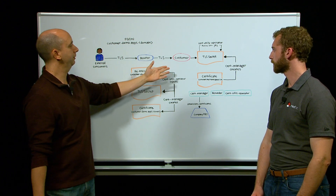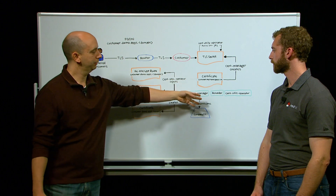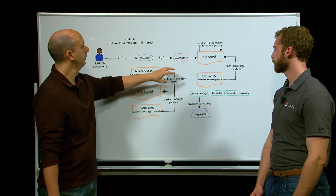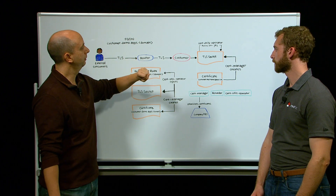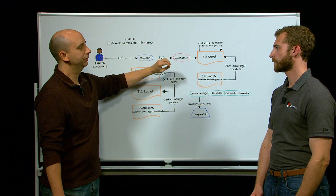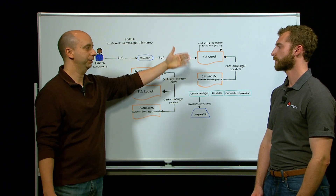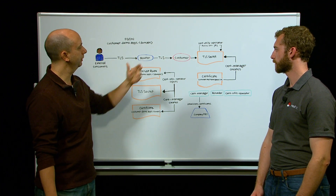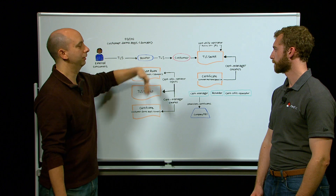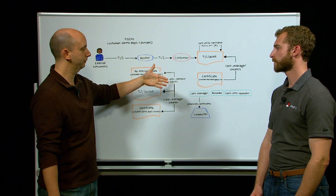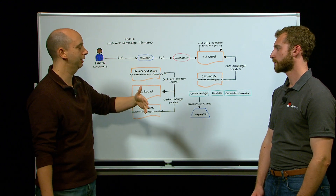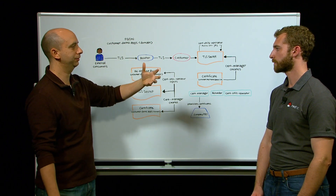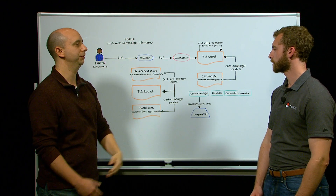If the application is not able to do that, we have a third operator here to help with that — it's the reloader operator. With this operator, we can configure the pod to be redeployed when a secret or a config map changes. In this case, it's going to be the secret. So when the secret is refreshed, a rolling deployment will be triggered for the application so we don't get any outage. And once the pod is rebooted and the application comes up again, it will have the new secret.